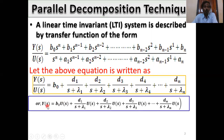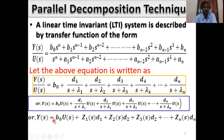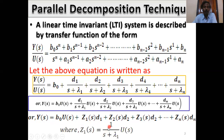Multiplying both sides by U(s), we get Y(s) equals b0·U(s) + d1·U(s)/(s + λ1) + d2·U(s)/(s + λ2) + d3·U(s)/(s + λ3) + ... + dn·U(s)/(s + λn). Then Y(s) equals b0·U(s) + z1(s)·d1 + z2(s)·d2 + z3(s)·d3 + ... + zn(s)·dn, where z1(s) = U(s)/(s + λ1), z2(s) = U(s)/(s + λ2), z3(s) = U(s)/(s + λ3), and so on up to zn(s) = U(s)/(s + λn).